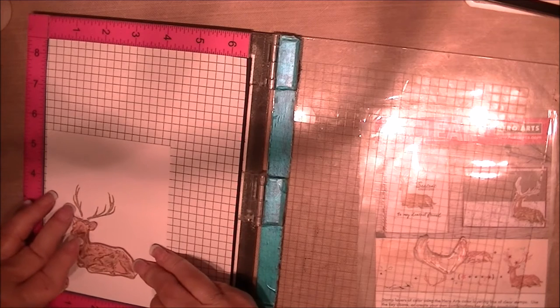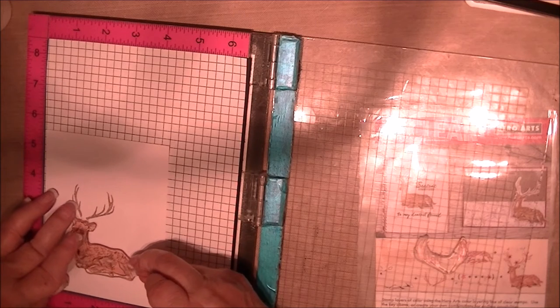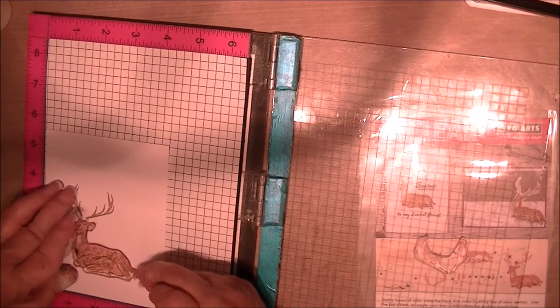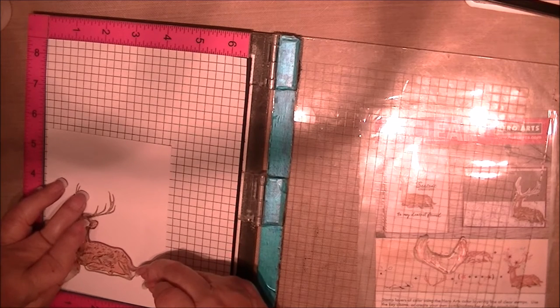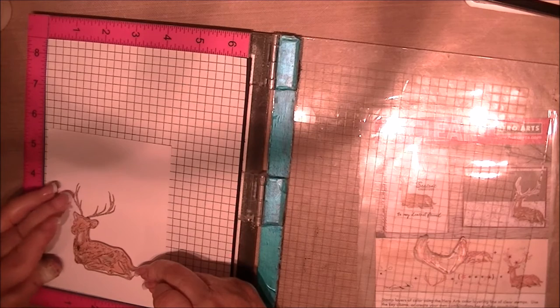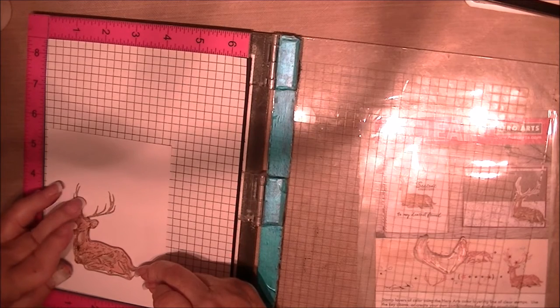Now I'm going to position the body for step three. Again, I'm lining up the tail. I'm looking at the bottom of his feet and the nose. And when I get it where it looks good, I'll close the lid to pick it up.